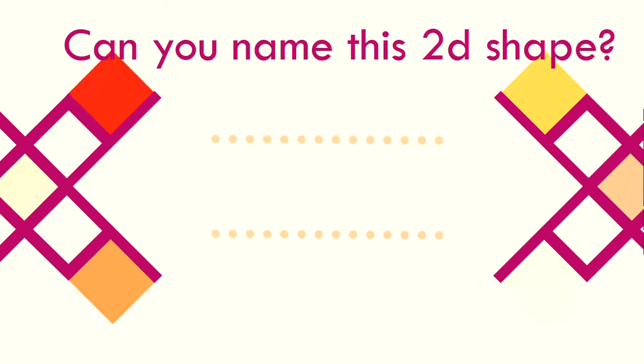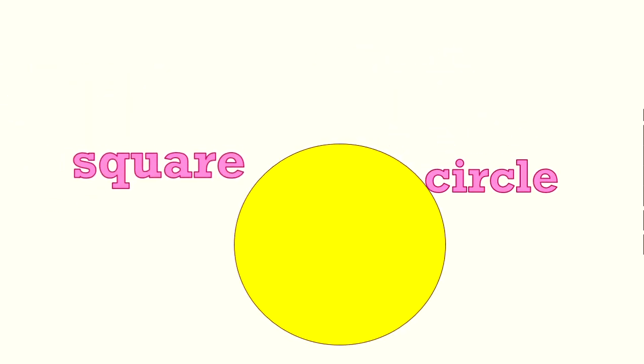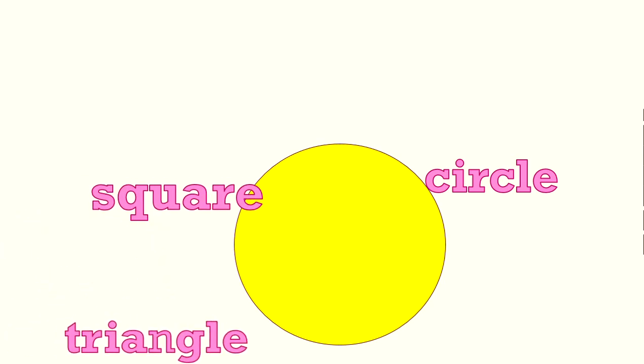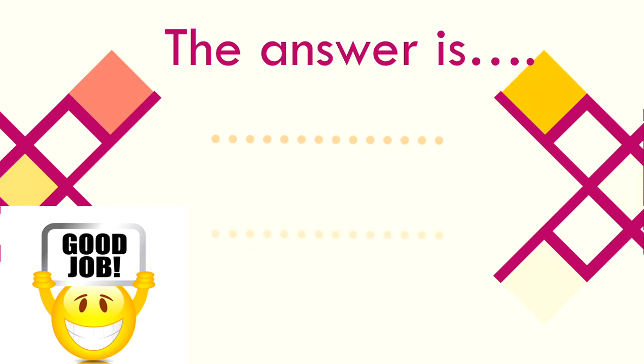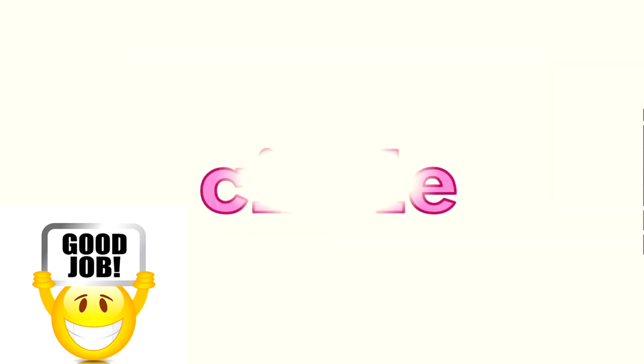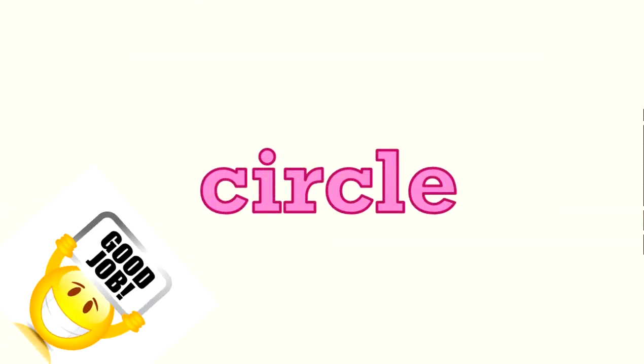Can you name this 2D shape? Is it a circle? A square? A triangle? Or a pentagon? I think you've got it. The answer is circle. Good job.